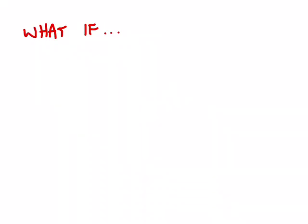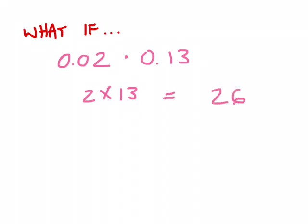The other thing that you might come up against and wonder, well, what do I do is a problem like this. Let's say that I had 0.02 times 0.13. I'm going to multiply these together again. I get to ignore the decimals, so I can just treat this as 2 times 13, which if I'm good with my mental math, I'm going to remember is 26. So I know I've got this answer, 26.